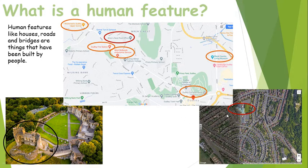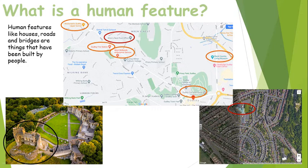Our school is definitely a human feature because somebody built it. This whole photo is a beautiful example of geographical human features — you can see the patterns of the roads that have been built, and the lovely little squares of people's homes. All of these buildings and roads are human features in this photo.